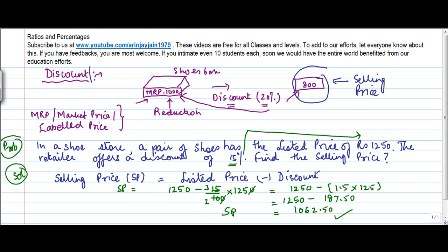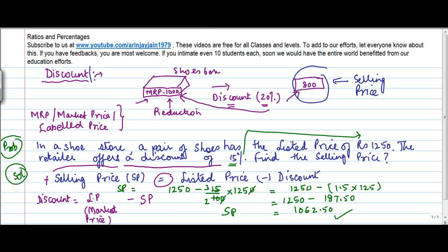How is this calculated? I know the listed price, I know the discount, and when I reduce the discount from the listed price I get the selling price. This formula can also be turned around: if you have to calculate the discount, you can write that discount equals listed price or marked price less the selling price — the sign changes as you transpose terms. You can interchange these three elements to find any one of them when different sets of information are given.